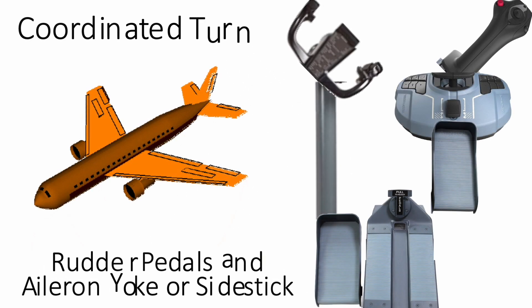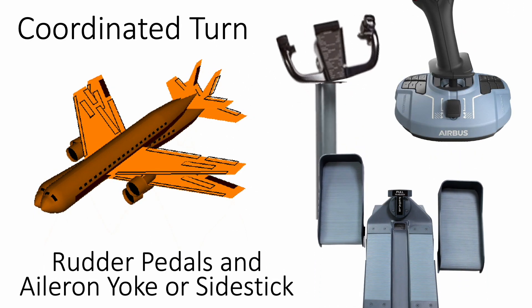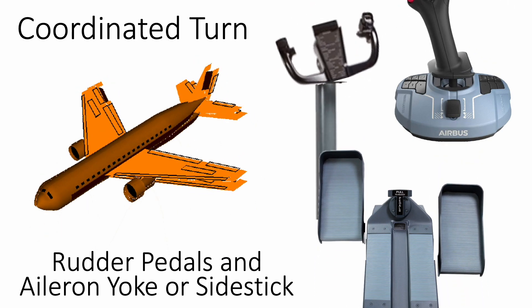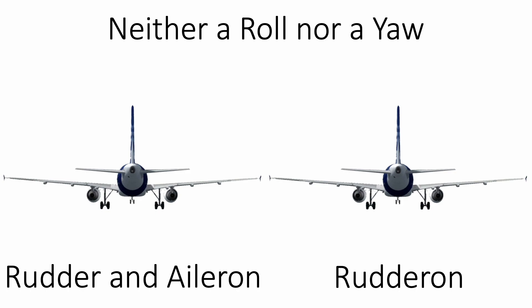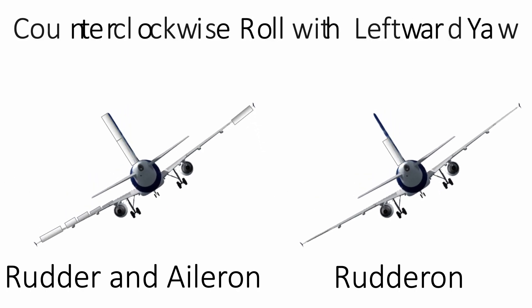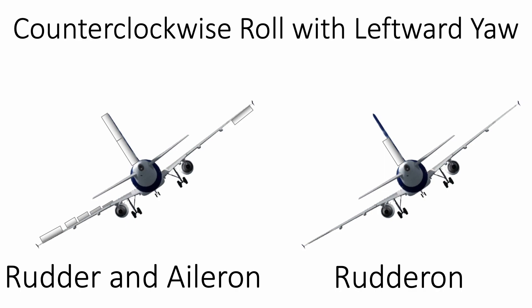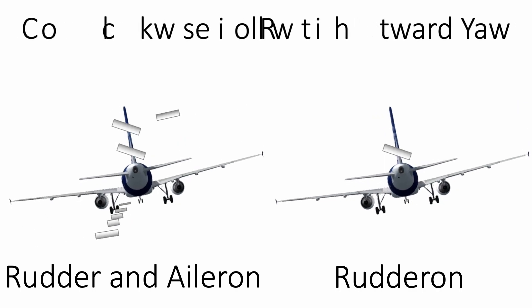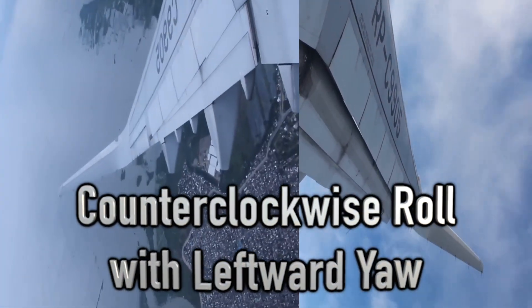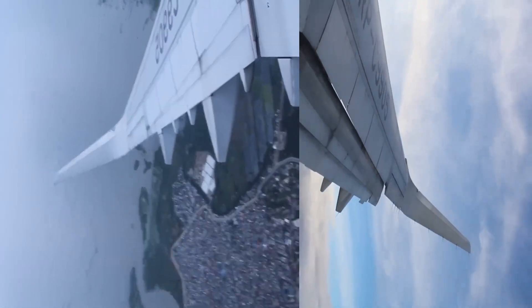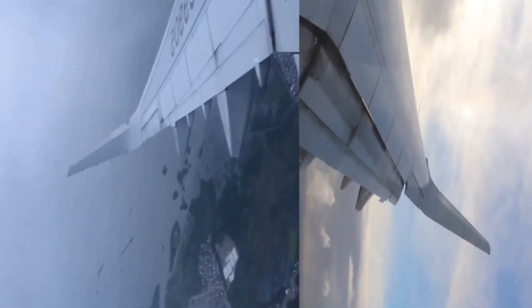But how would the rudderons move when the airplane is rolled and yawed simultaneously? The simple answer is that only one of the two rudderons would move significantly. Because the rudder and the aileron on one section, either the upper or the lower one, have opposing directions — they cancel each other's deflections. So either rudderon would essentially remain as is.